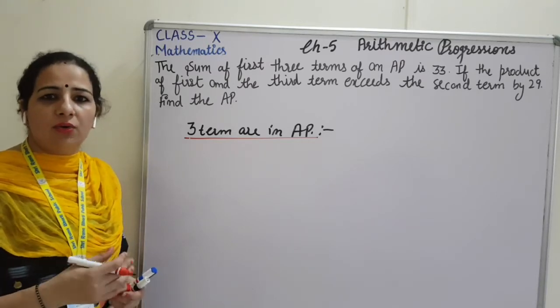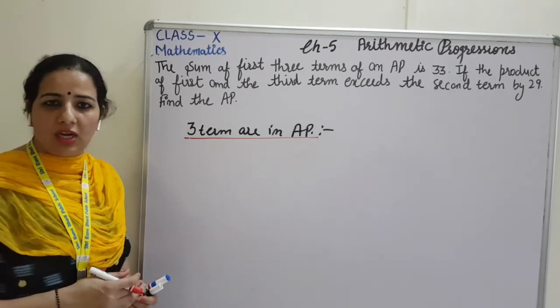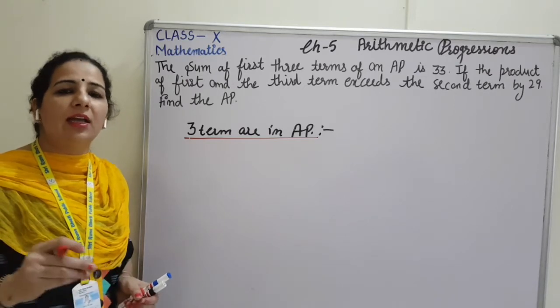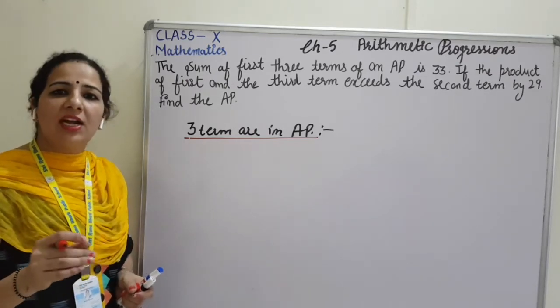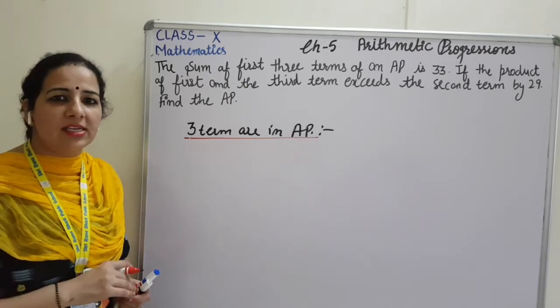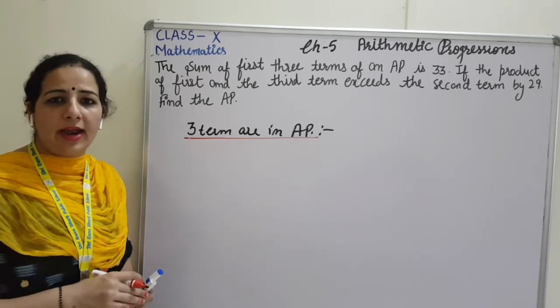Like in the age questions, if the age is not given, how do we start the question? Let the age of Ram is equals to X, let the age of Sham is equals to Y. So similarly...